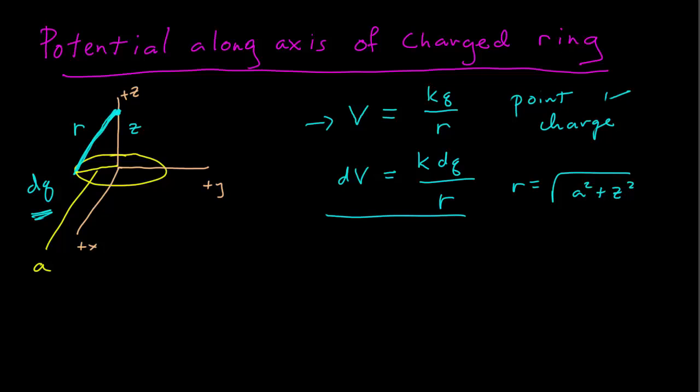And so our typical approach is we'd say we have this small amount of charge, it's equal to some charge density. Okay, uniform, we didn't really mention that, uniform charge density.